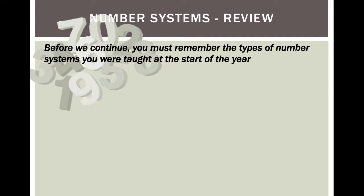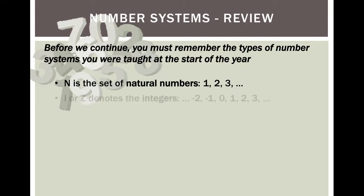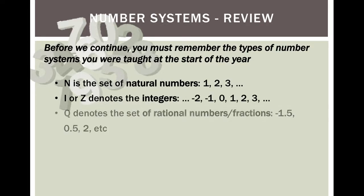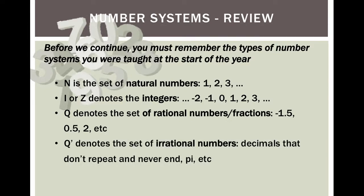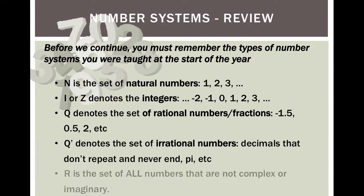Let's review some number systems. You must remember the types of number systems you were taught at the start of the year. N is a set of natural numbers. I or Z denotes the integers. Q denotes a set of rational numbers or fractions. Q' denotes a set of irrational numbers. And finally, R is a set of all numbers that are not complex or imaginary.